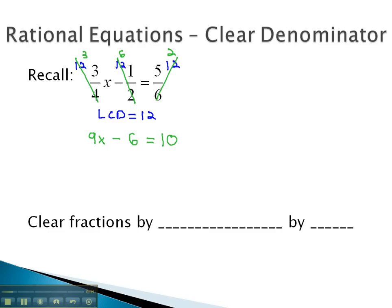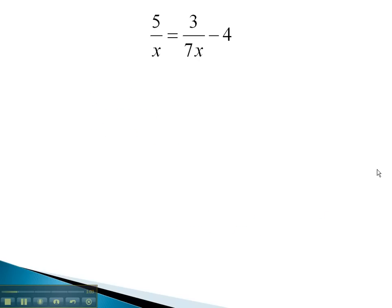As our rational expressions become more complex, we will use this same exact strategy. We will clear fractions by multiplying by the least common denominator. Let's take a look at some examples where we use this strategy to clear the fractions.